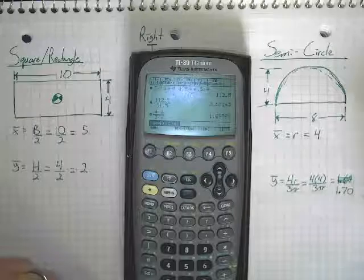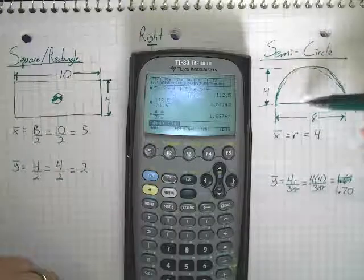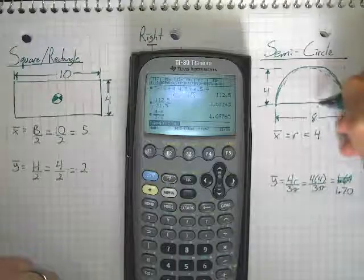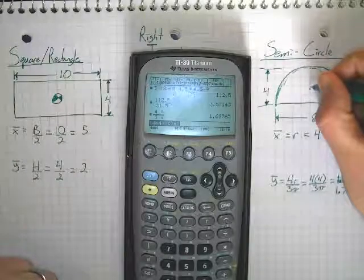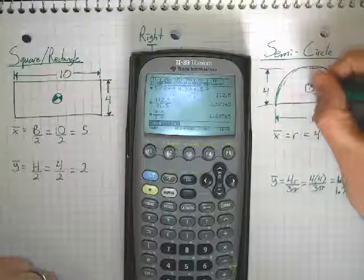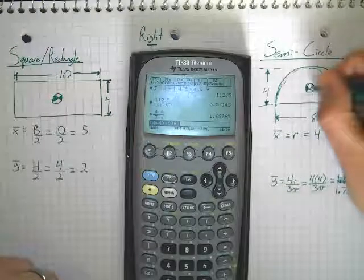Either way, we get the answer. So, if I go my radius of 4, 1, 2, 3, 4. And, I go 1, and 0.7 is going to be somewhere in here, let's say. There is my centroid for my semicircle.